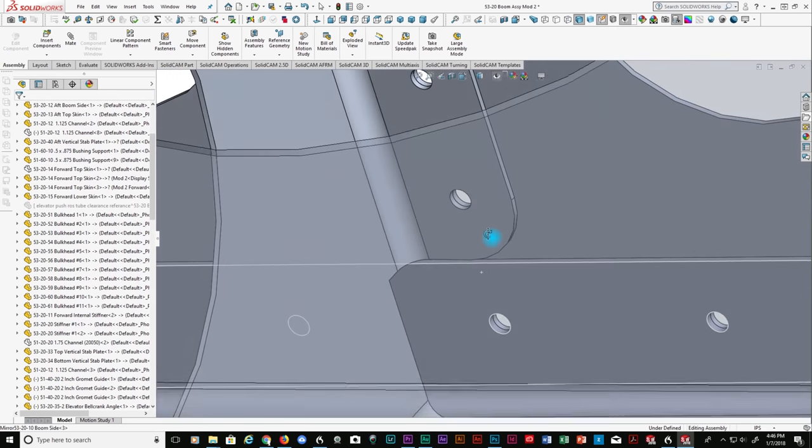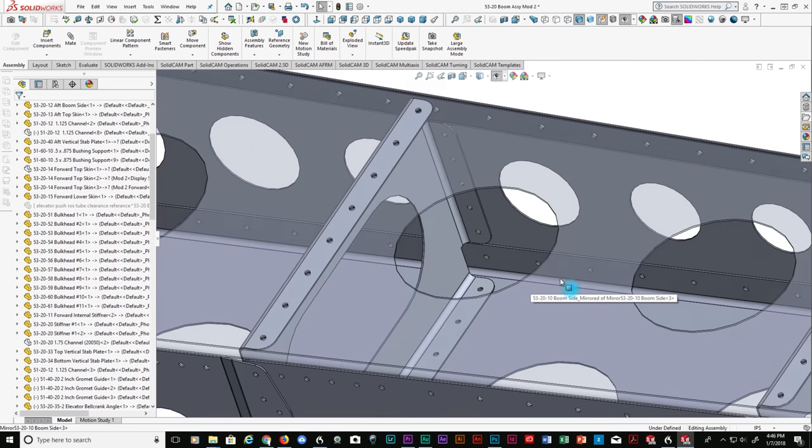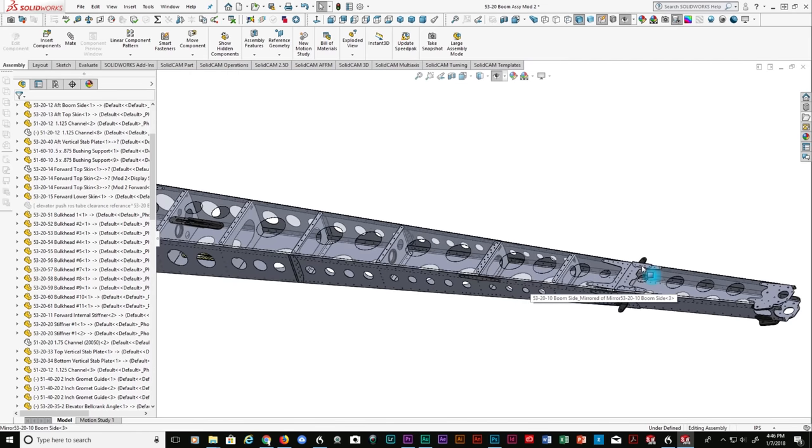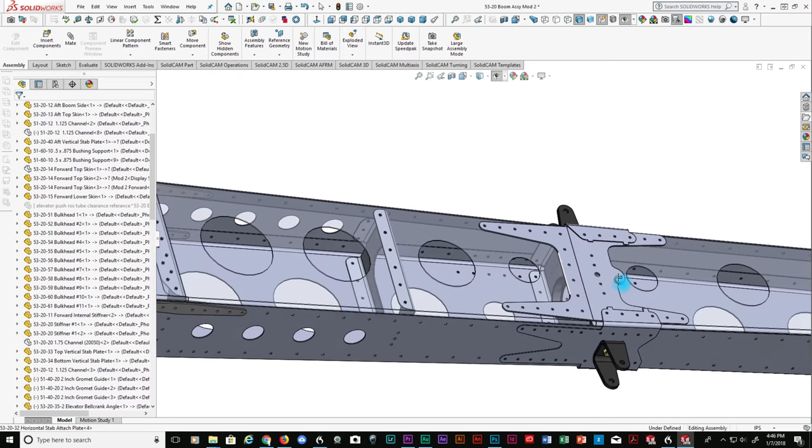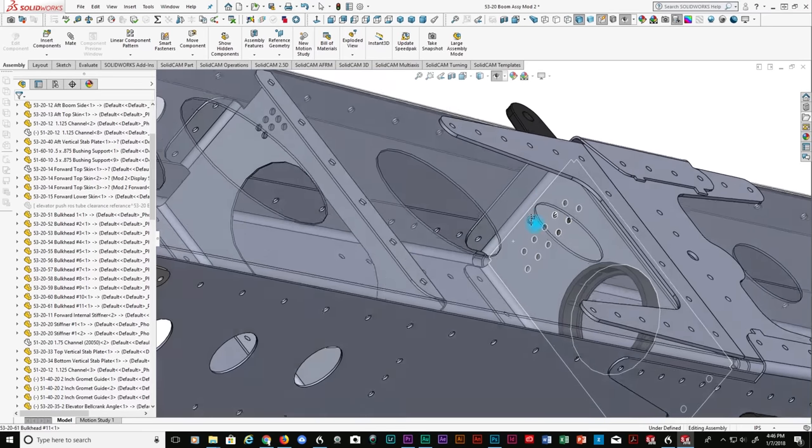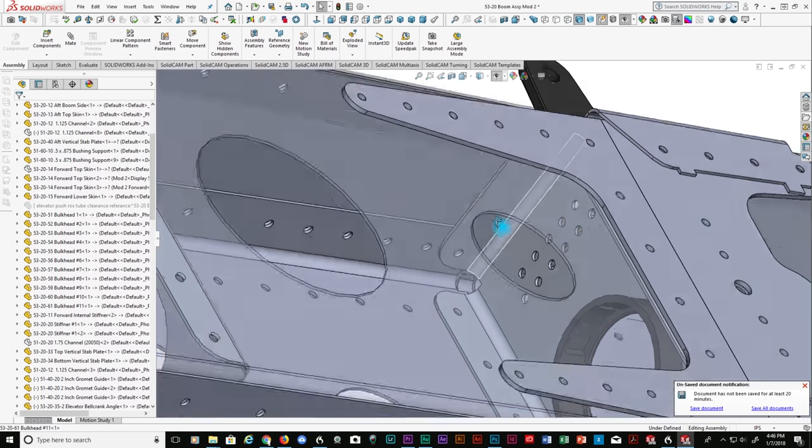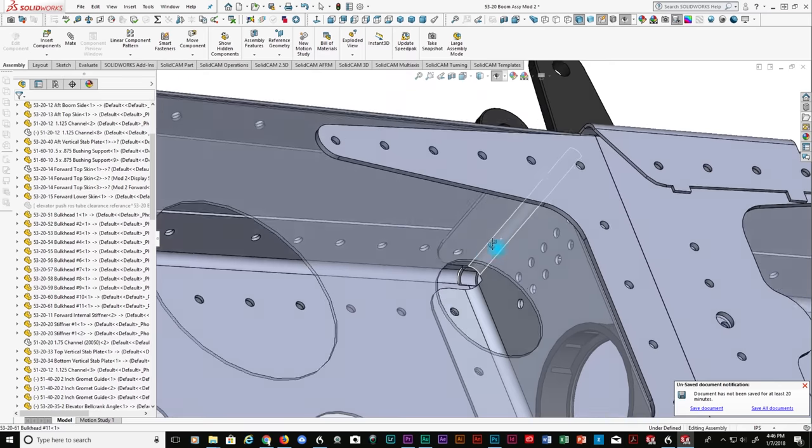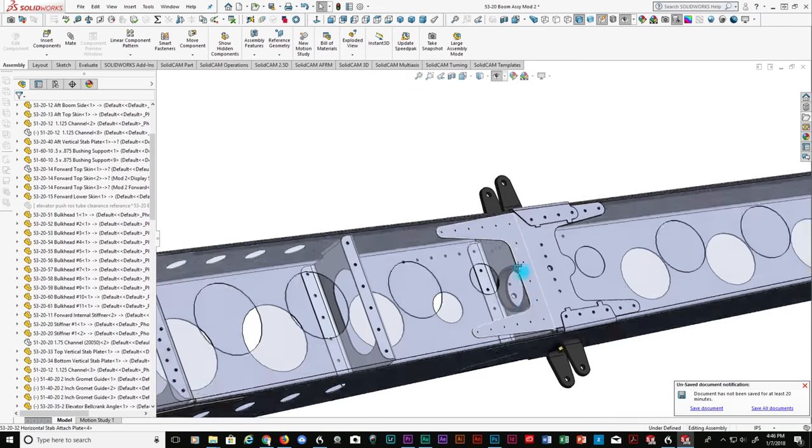We use this process on nearly all of the bulkheads within the fuselage sub-assembly, however bulkhead number 11 is a little bit of a problem. Because of the narrow dimensions between the two fuselage sides at this location, there's no room left for an upper and lower flange between the fuselage side flanges.